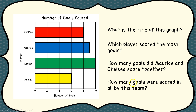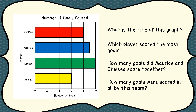How many goals were scored in all by this team? We're going to add up all of these. We have 8 plus 9, which we just talked about is 17. Landon scored 10, so 17 plus 10 is 27. And Ahmed scored 6, so 27 plus 6 gives us 33 goals. That's a good number of goals for them to have scored.